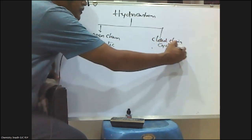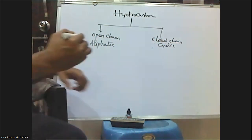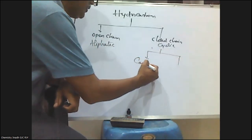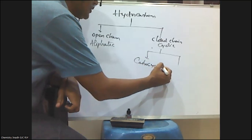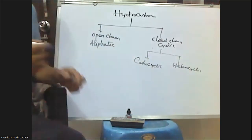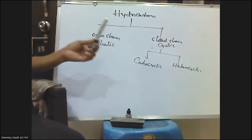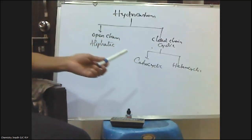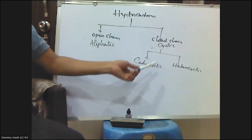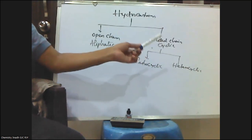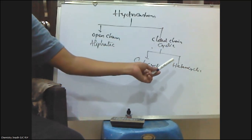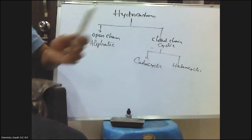Cyclic compounds are again subdivided into two types: one is carbocyclic and the second one is heterocyclic. Carbocyclic means the ring-forming elements are all carbons. If along with carbon, any other heteroatoms such as oxygen, sulfur, or nitrogen are present, then it is called a heterocyclic compound.